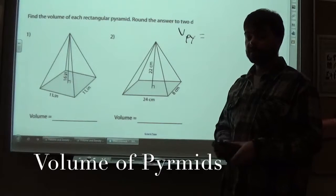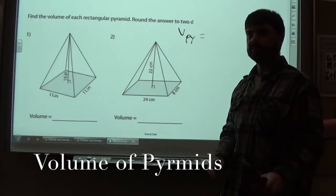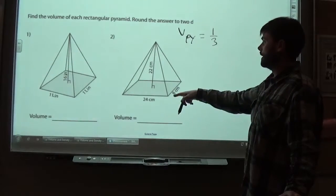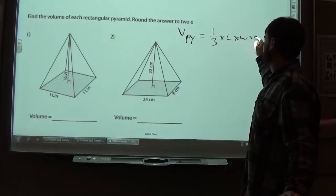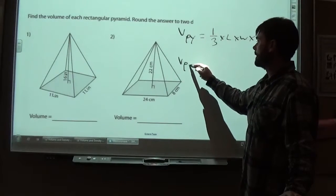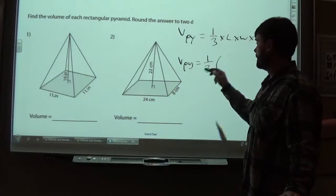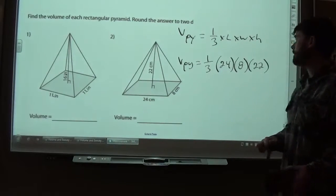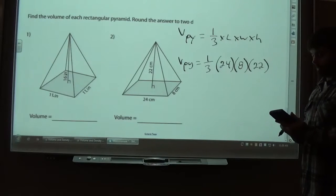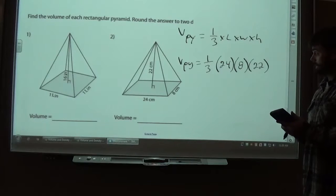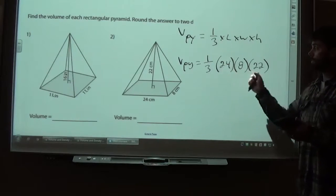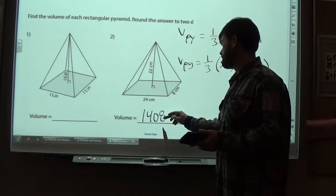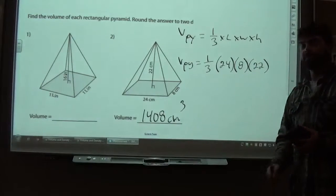Pyramids are one third base times height also, very similar to a cone. However, the base of a pyramid is a square or a rectangle. It's not circular. So, when we do a third the base times the height, you really got a third times the length times the width times the height. So, they give you three measurements here. If this is the pyramid that I'm trying to solve for, I have one third multiplied by 24, 8, 22. Order of operations here doesn't matter so much. I'm going to go multiply these three together, 22, 8, 24. Gives me 4,224 and then divide by 3. Gives me 1,408. And again, this would be cubic centimeters.